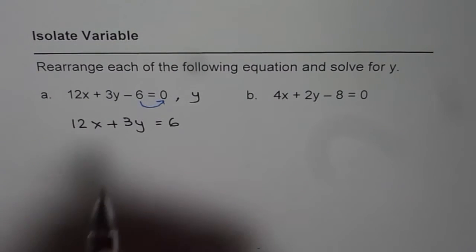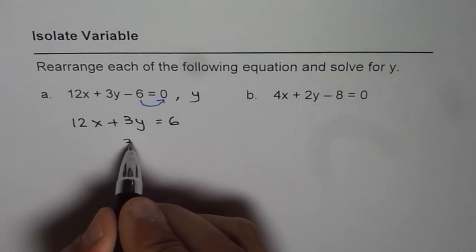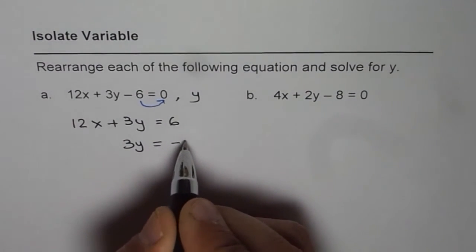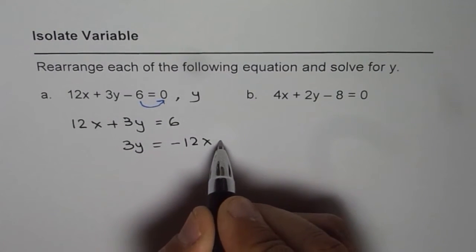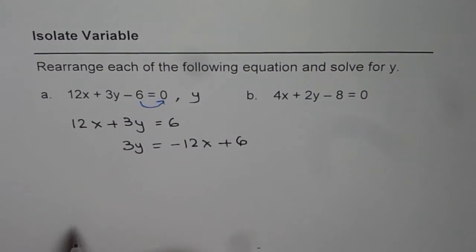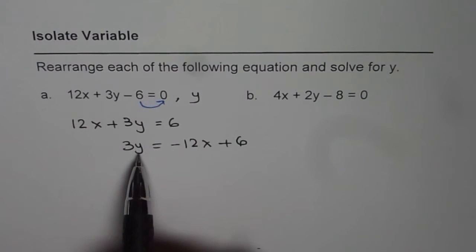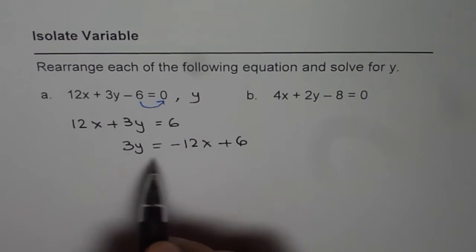Now we will take 12x on the other side, so we get 3y equals minus 12x plus 6. Now to isolate y, we should divide by 3 on both sides.